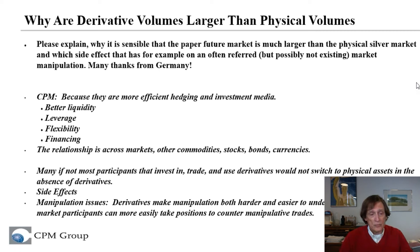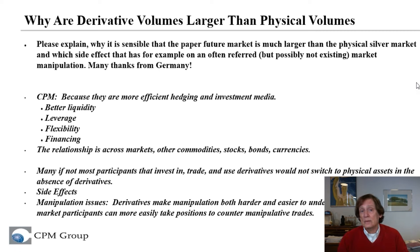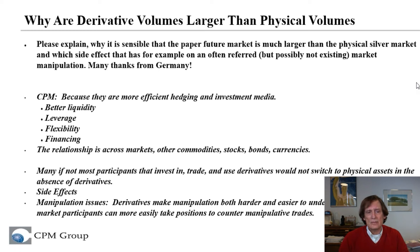If you're a producer, a refiner, a smelter, a fabricator, a wholesaler, a retailer, a manufacturer of products that have silver and other commodities — futures, options, forwards, and other derivatives are much more efficient for hedging your pricing. And for short-term investment, they're also more efficient. There's better liquidity, better transparency, and they're leveraged in most cases.